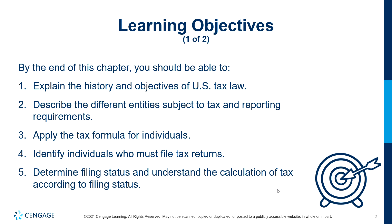The first objective is to explain a little bit about the history and objectives of the US tax law. Then we're going to describe the different entities subject to tax and reporting requirements. We're going to apply the tax formula for individuals, identify individuals who must file a tax return, determine filing status, and understand the calculation of the tax according to the filing status — that's very key.